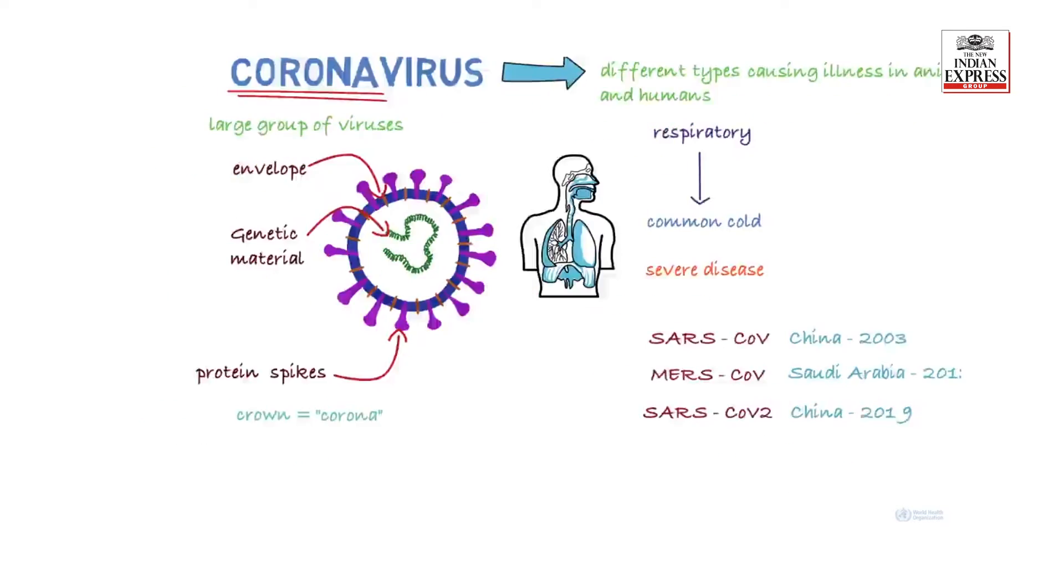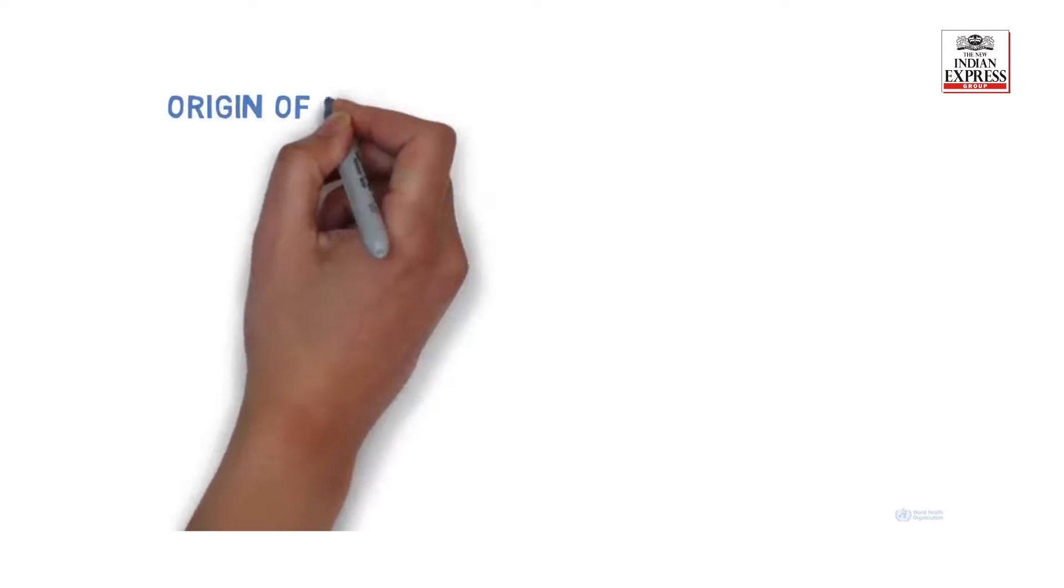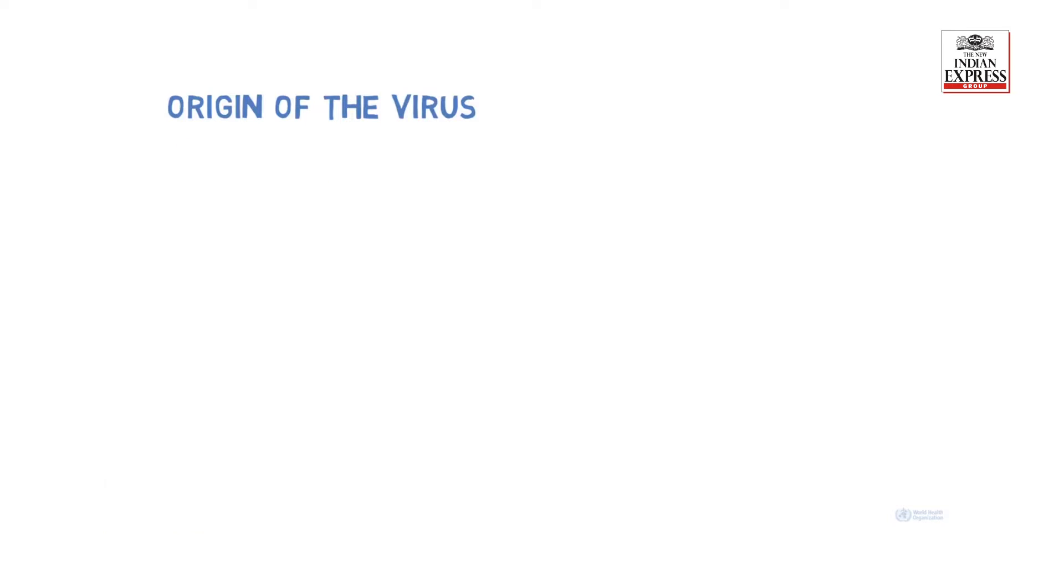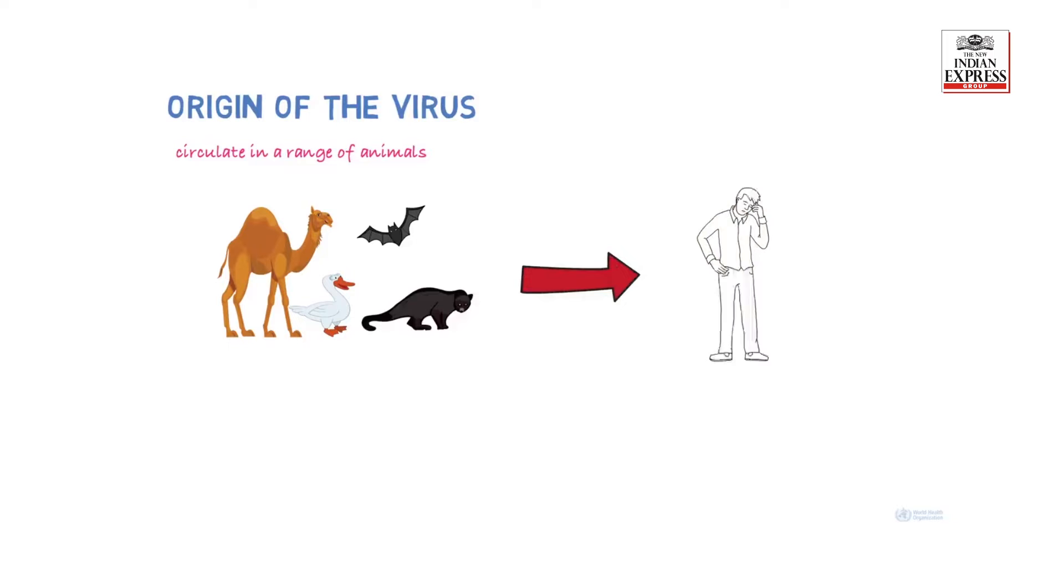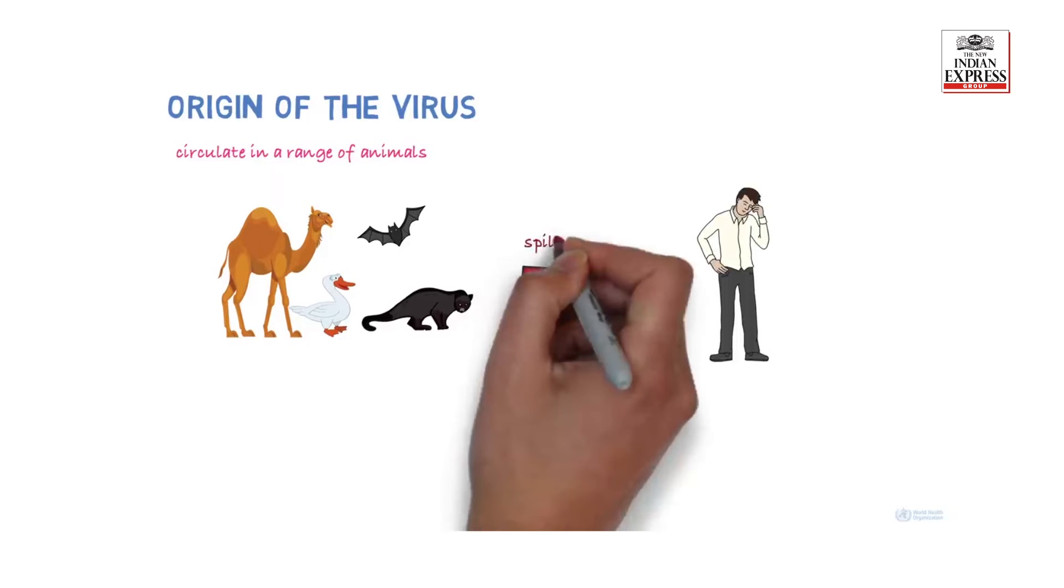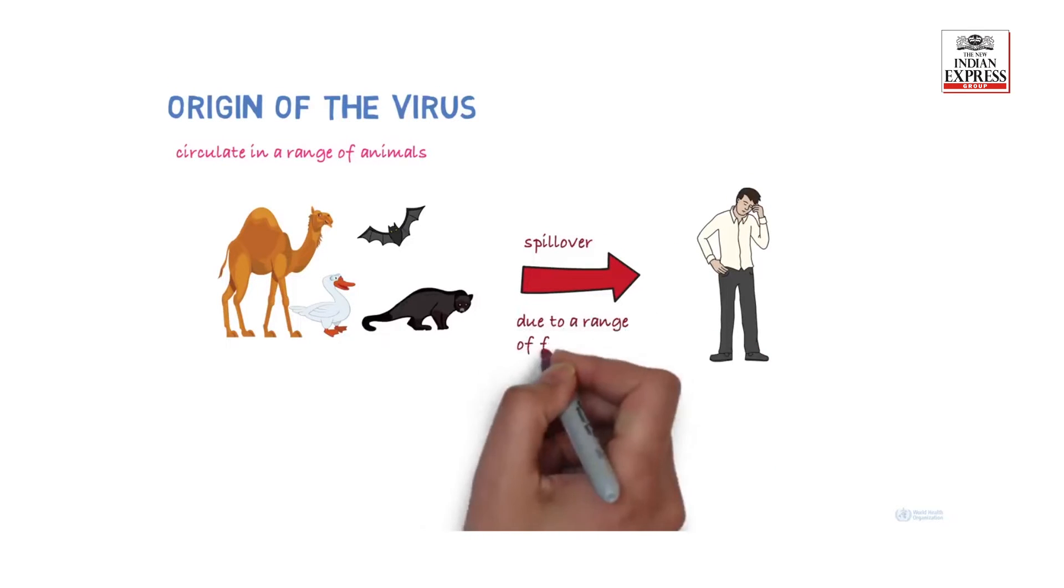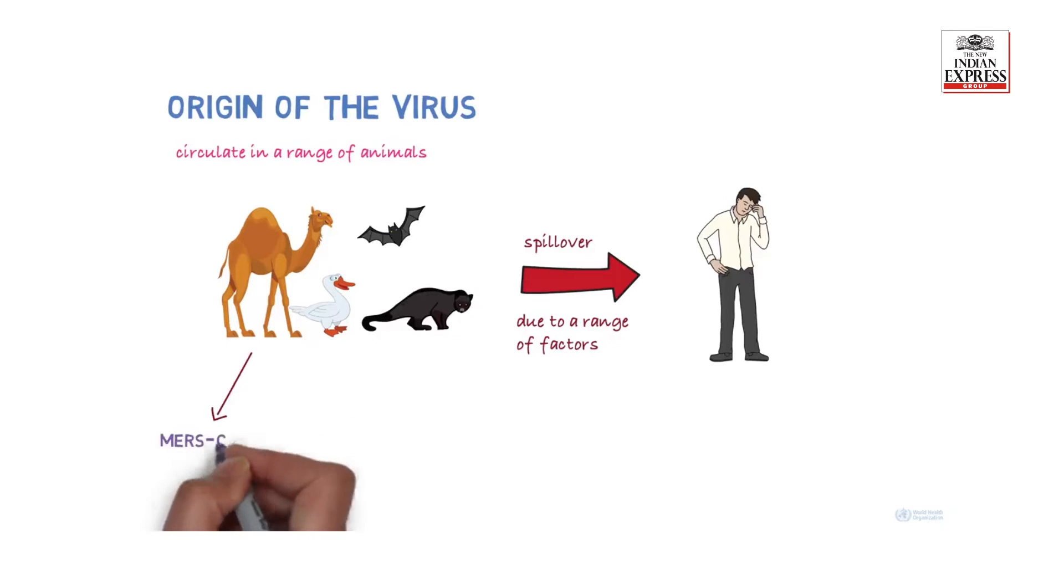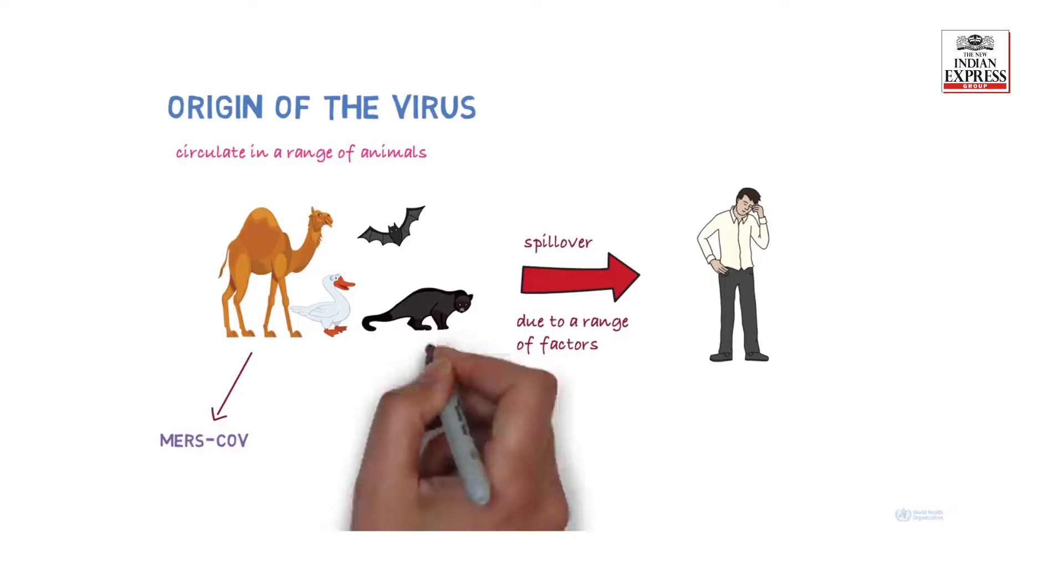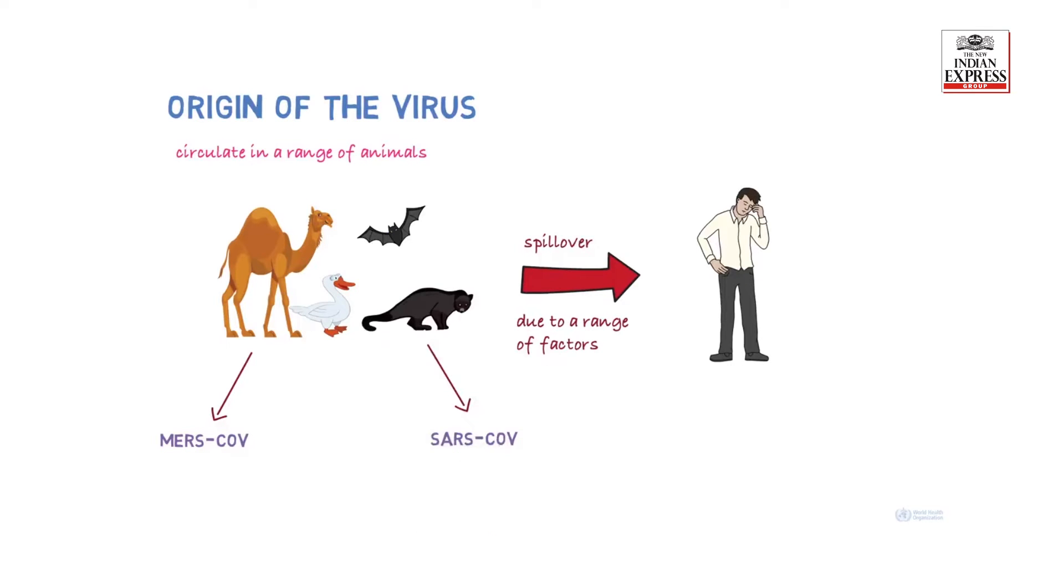Where did this new virus come from? It's known that coronaviruses circulate in a range of animals. Sometimes, these viruses can make the jump from animals to humans. This is called a spillover and could be due to a range of factors, such as mutations in the virus or increased contact between humans and animals. For example, MERS-CoV is known to be transmitted from camels and SARS-CoV from civet cats.